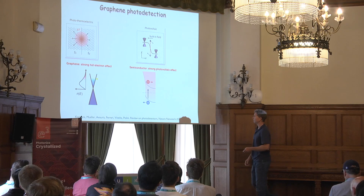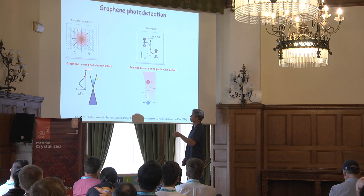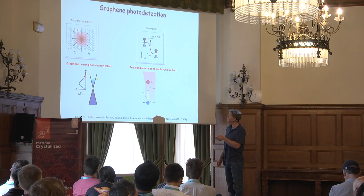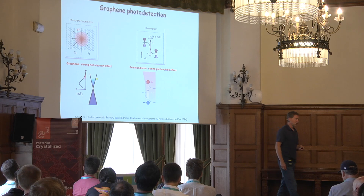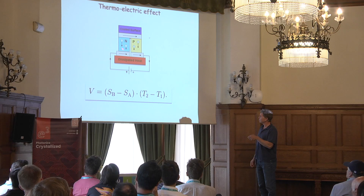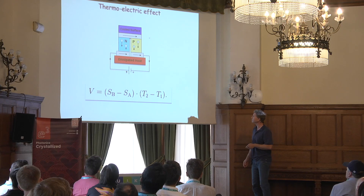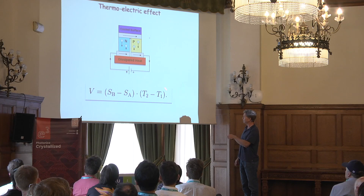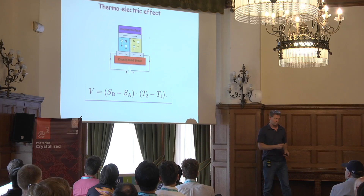This electronic heat can generate a voltage through the photothermoelectric effect, also called the Seebeck effect. That happens when I have a difference in Seebeck coefficient. In the classical thermoelectric effect, you have two different materials with different thermoelectric coefficients, and if there's a temperature difference between the two, a voltage is generated. A delta T and a delta S leads to a voltage — that's the standard thermoelectric effect.